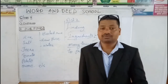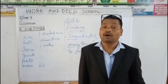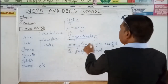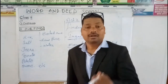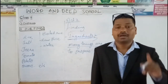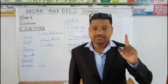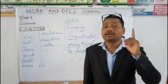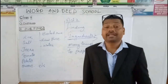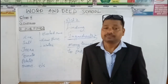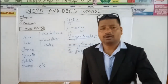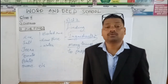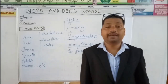To make different kinds of food, we need different materials. These materials which are required to prepare food are known as ingredients. Now, list out some food items you like to eat and try to find out what ingredients are used to prepare them.